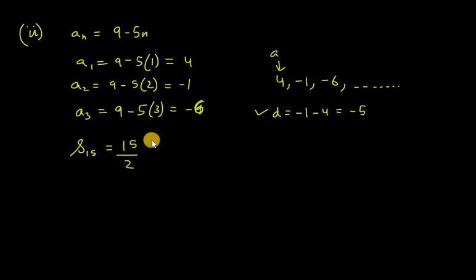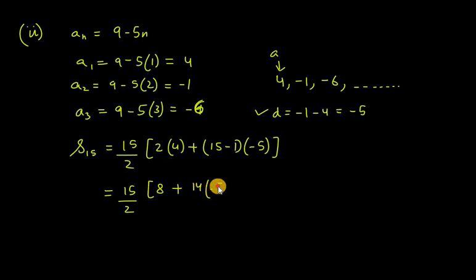So 15 over 2, in bracket twice of A, A is 4, plus n minus 1 which is 15 minus 1 into D, D is minus 5. So 15 over 2 as it is, 2 into 4 is 8, plus 14 into minus 5. So 15 over 2, 8, 14 into 5 is 70, so 8 minus 70 is minus 62.